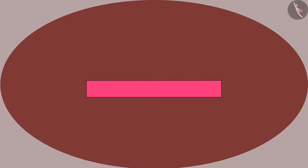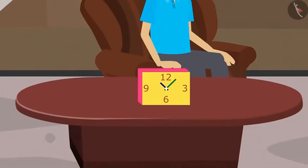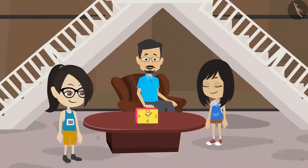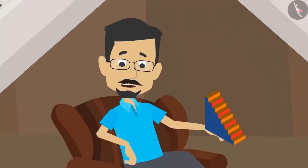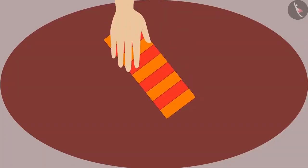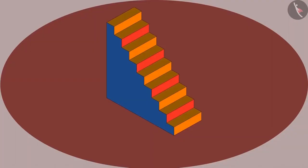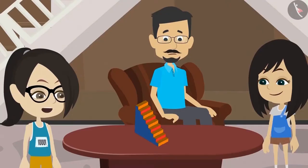For example, when you look from the top, the clock looked like a rectangle. But when you saw from the front, you could see a clock. Now I have understood a little. Let me explain this to you with another example. I have a toy that is in the shape of a staircase. I will place this staircase on the table here. Now we will make a picture of it. That will be fun.